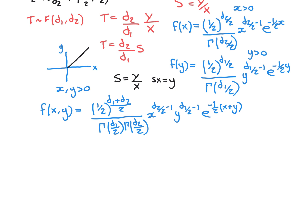S will not include 0 either, because the probability density of Y being 0 is 0. So the probability of lying on the line y = 0, which would give S = 0, is also 0. Therefore our new random variable S truly only has a non-zero PDF on the positive real numbers.